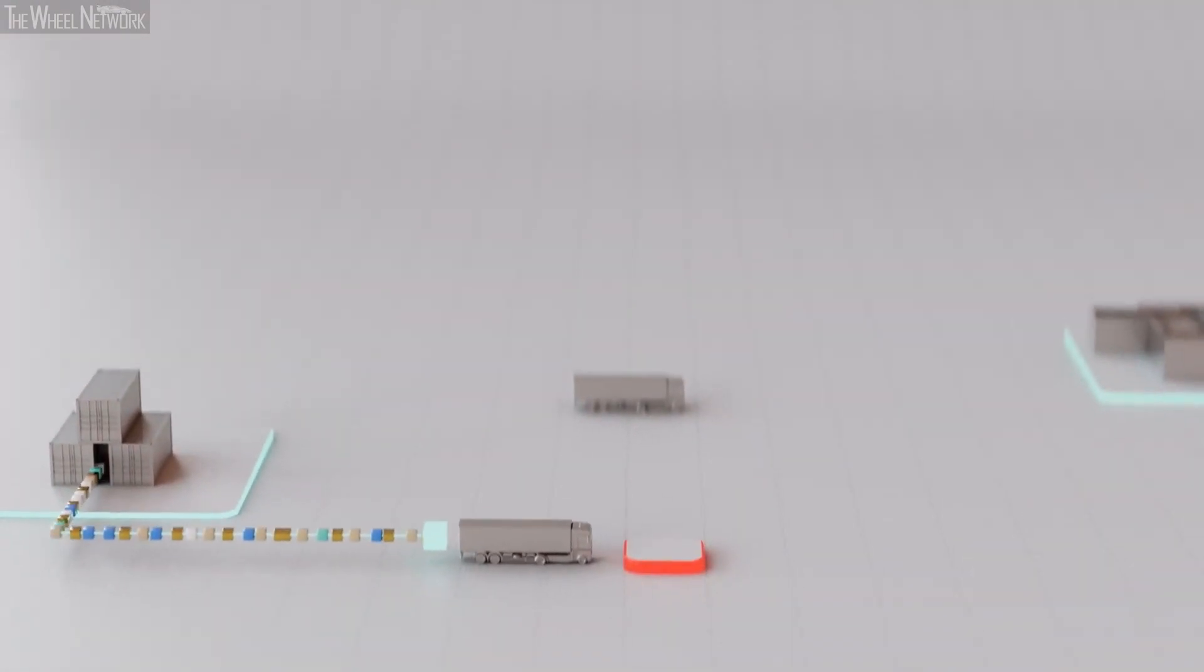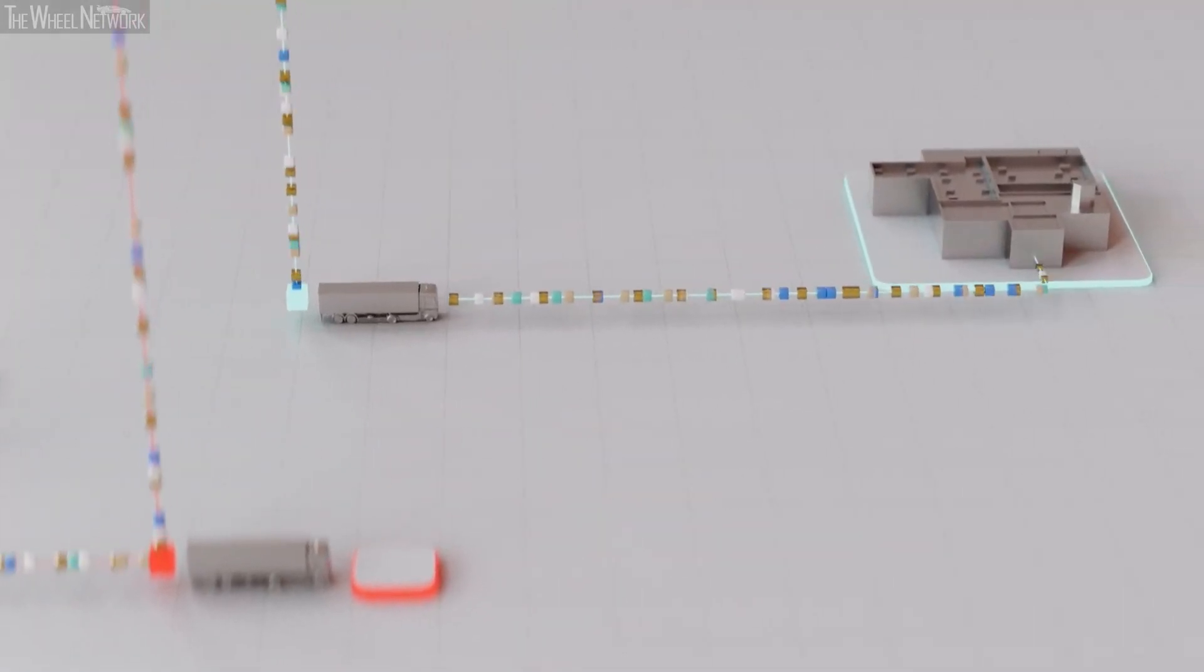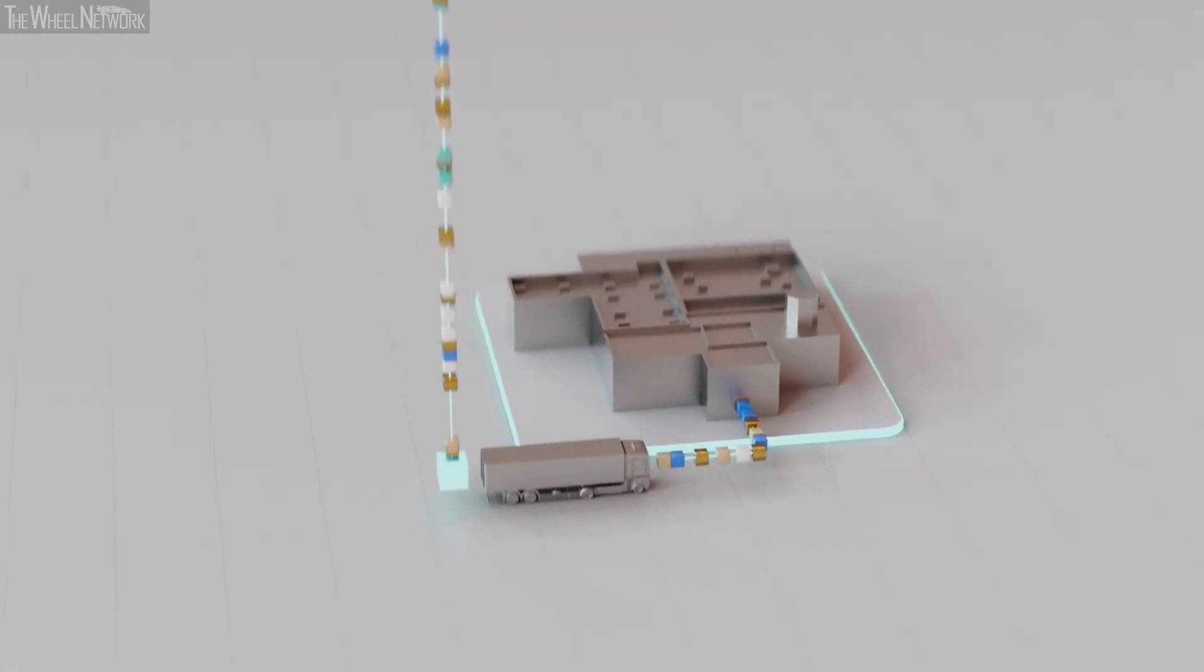Our environment is also prone to unforeseen events. Accidents, disasters, real-time simulation makes it easier to quickly adapt to such events when they arise. The metaverse helps us become more agile and resilient.